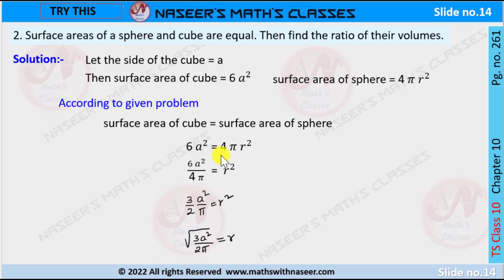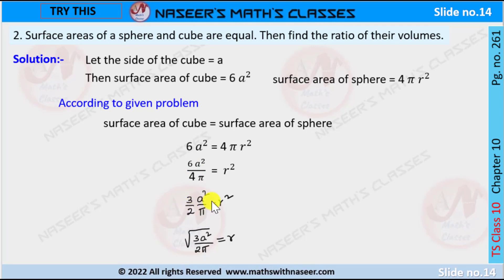This gives us 6a² = 4πr². To find r, we transpose 4π from the RHS to the LHS, giving 6a²/4π = r². Cancelling — 6 to 3 and 4 to 2 — it simplifies to 3a²/2π = r².